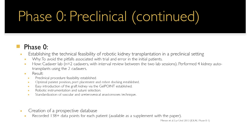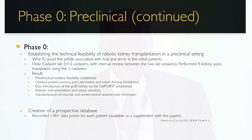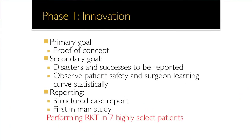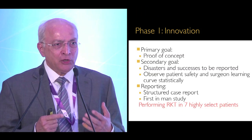We also wanted to prove technical feasibility in a real operating room setting. This was done on cadavers, performing four auto-transplants — taking two kidneys and re-hooking them into the same patient. These are the real pictures from those cadaver studies: placing a GelPort at the umbilicus, instilling ice slush, then performing arterial and venous anastomoses, which were harvested for strength, proving the principle that it would work.